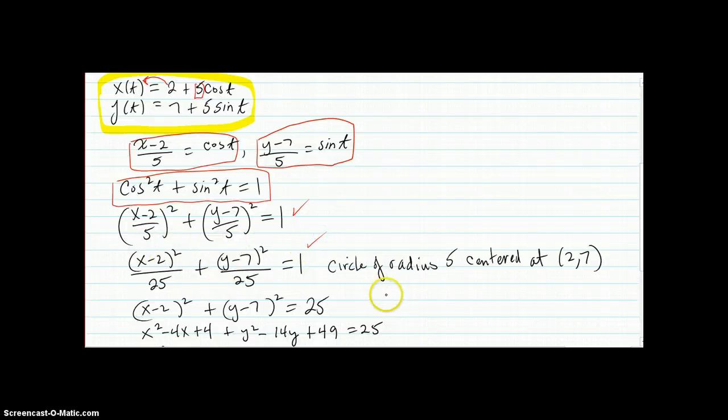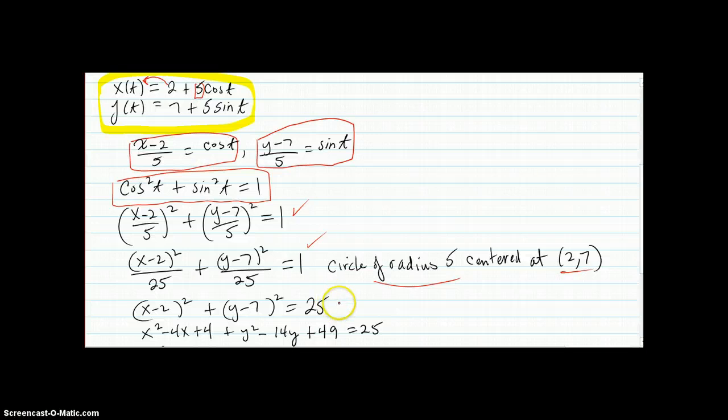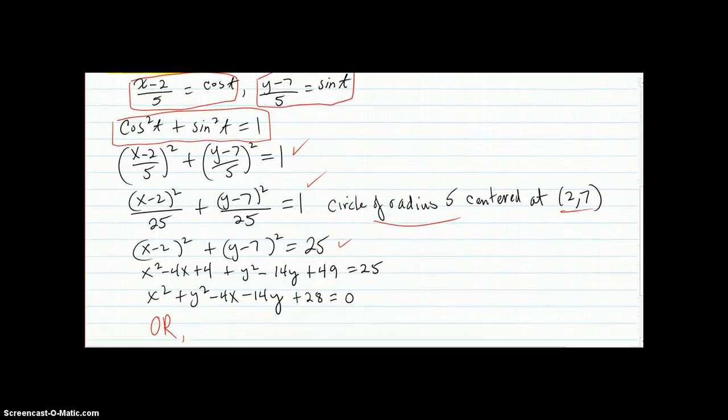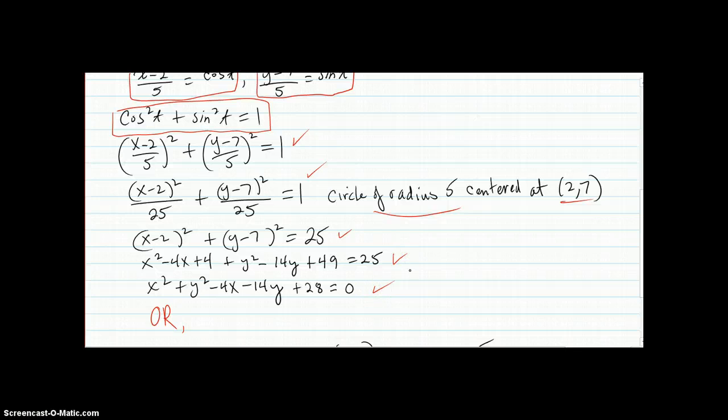You recognize already that it's a circle of radius 5 centered at 2, 7. But you can multiply over, you get the 25 here, expand everything out, write it like this if you want it completely expanded out.